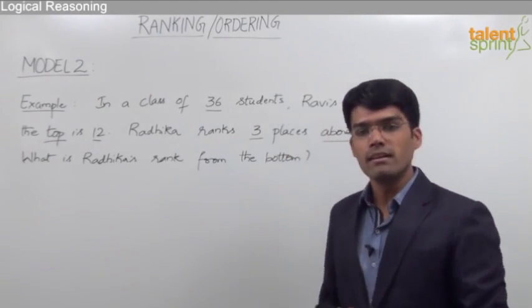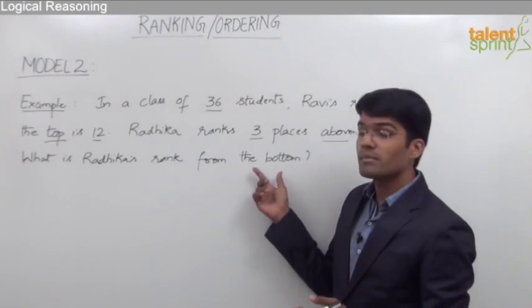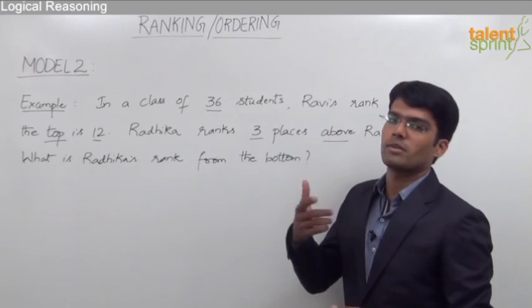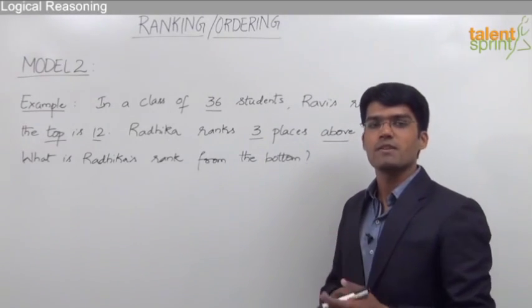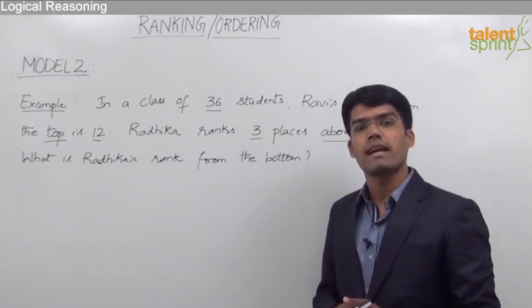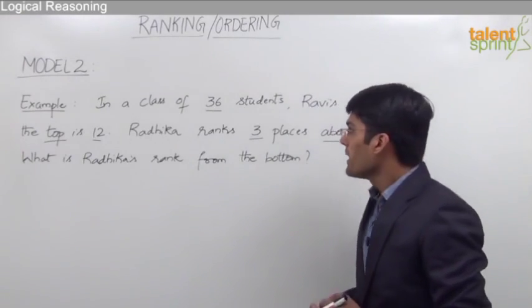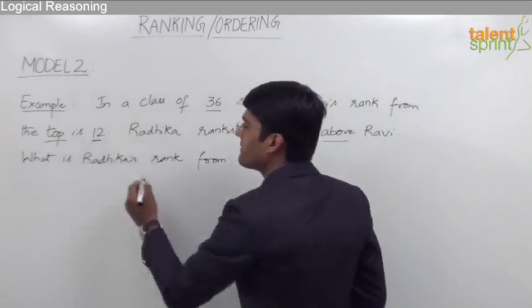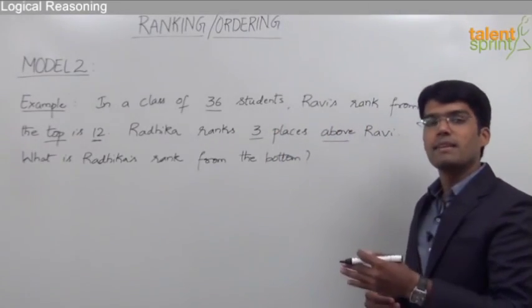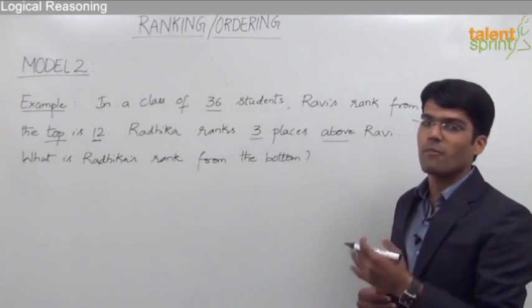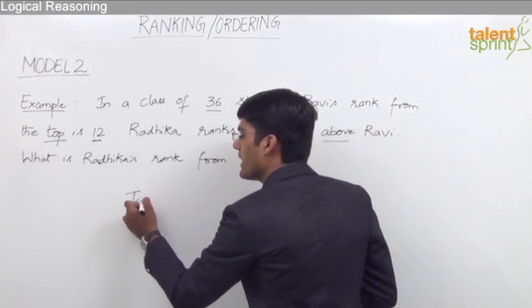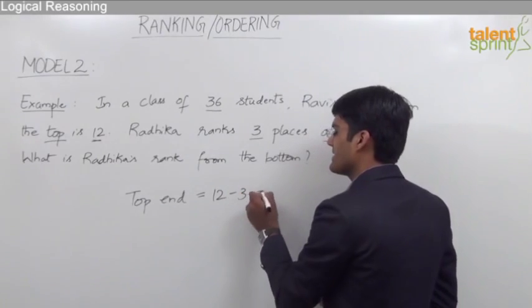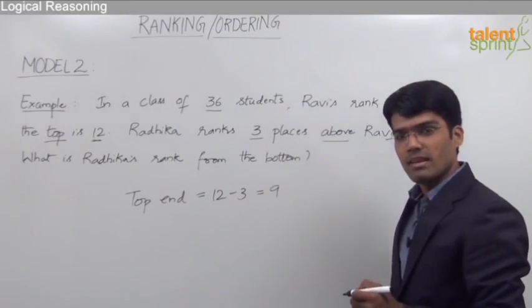We can find out the rank from the other end, that is the bottom end, only if we know the rank from the top end. So let us first find out Radhika's rank from the top end. As given, Ravi's rank from the top is 12 and Radhika ranks three places above Ravi.